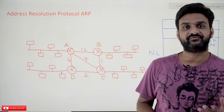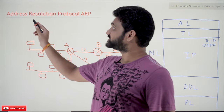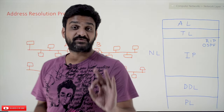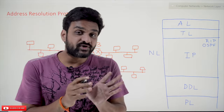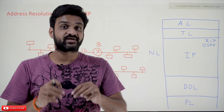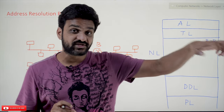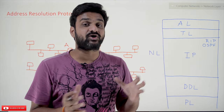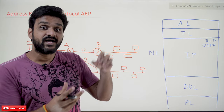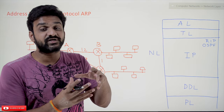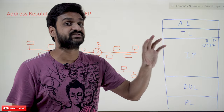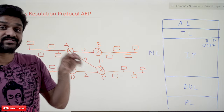Welcome to Learning Monkey. In this class we'll try to understand Address Resolution Protocol, in short called ARP. This concept is very important to understand because so far we have seen the network layer and data link layer separately, but we haven't understood the concepts in combination — how they both communicate with each other so that communication can be done efficiently.